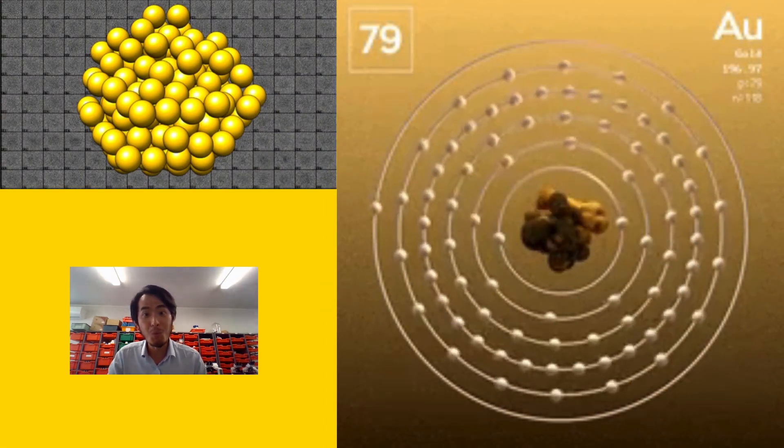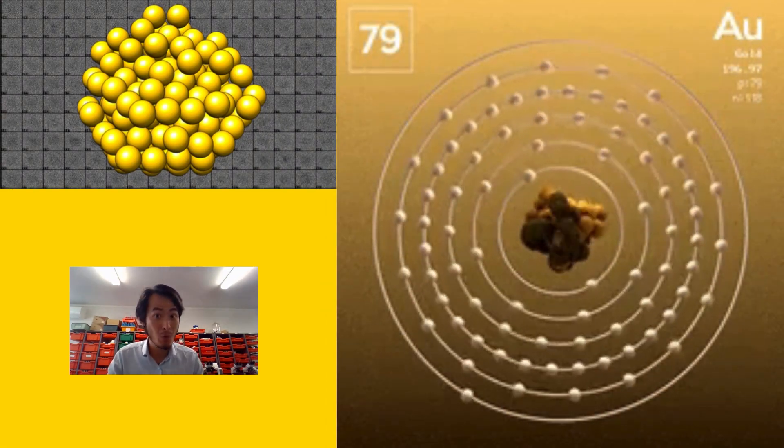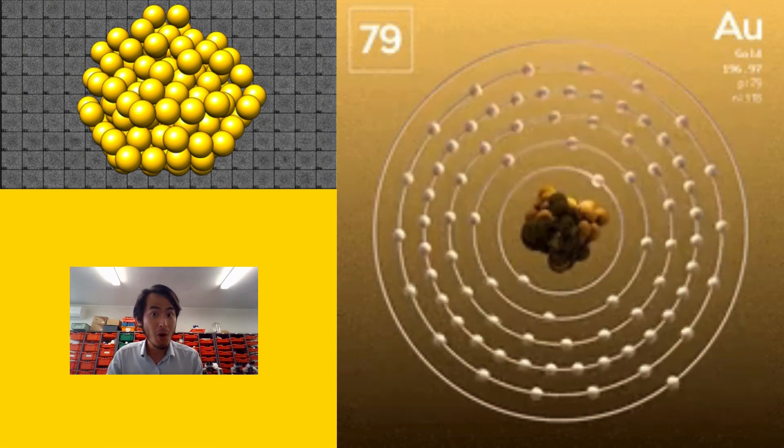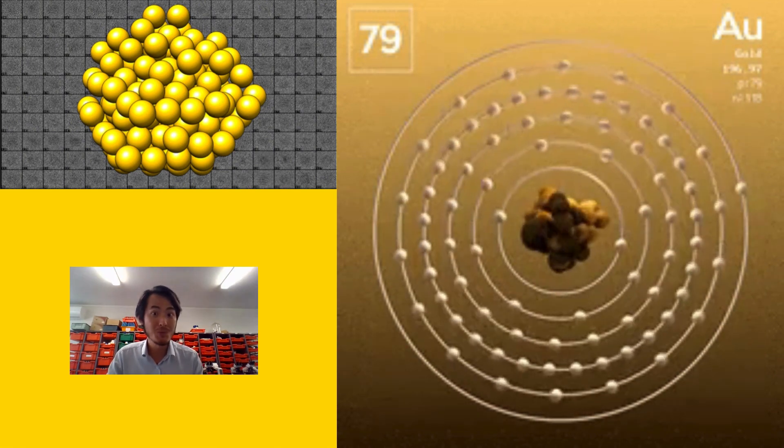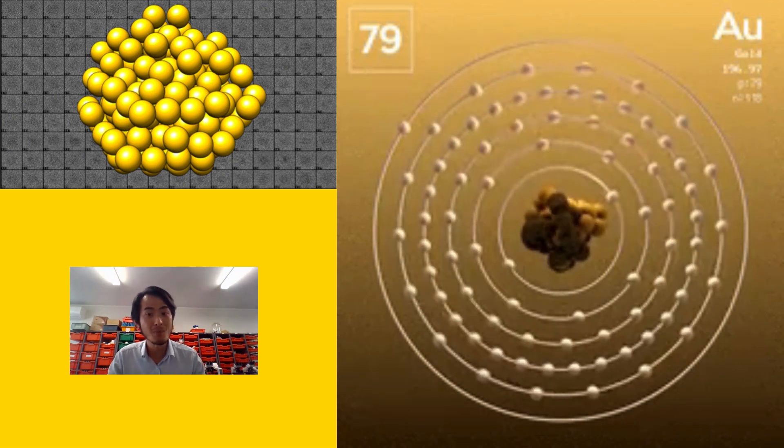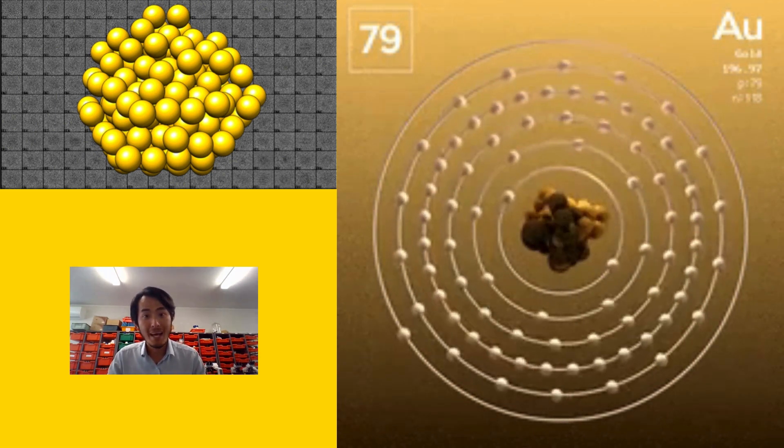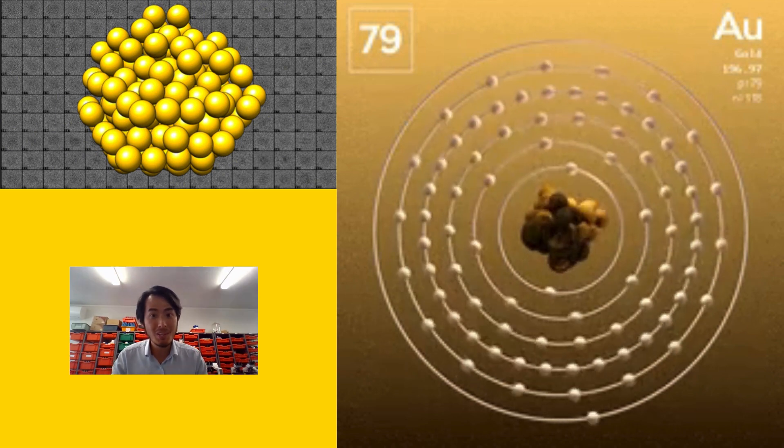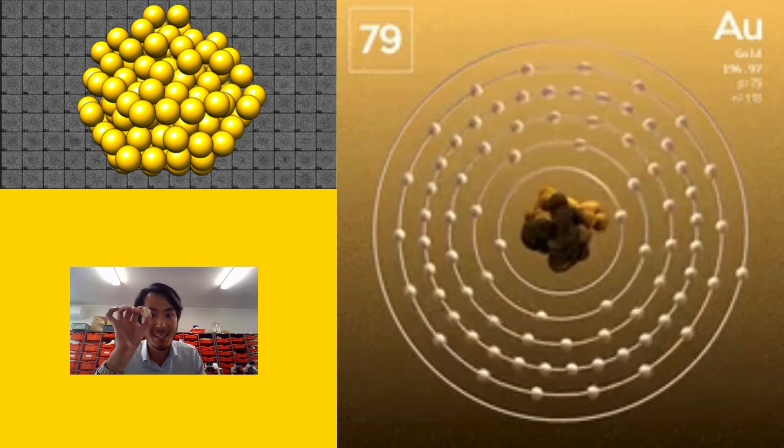This video is about gold. There are some interesting facts about gold. Do you know that gold has a chemical symbol of Au? It's not G, which you might think it should be, but it actually came from the Latin word aurum, which means gold. I'm going to show you how gold looks like, as you can see.